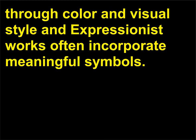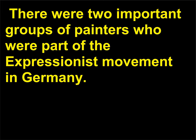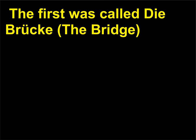Expressionist works often incorporate meaningful symbols through color and visual style. There were two important groups of painters who were part of the Expressionist movement in Germany: the first was called Die Brücke (the bridge), and the second was known as Der Blaue Reiter (the Blue Riders).